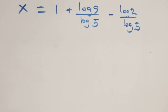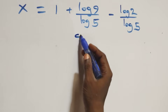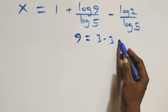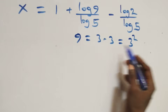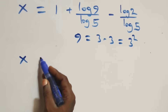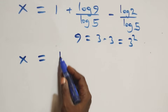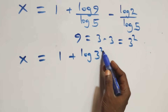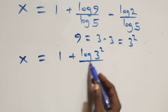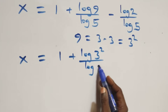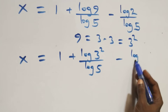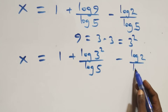From here, we can also rewrite 9 as 3 times 3, which is the same as 3 squared. That is, all we have becomes x equals to 1 plus log(3 squared) over log 5 minus log 2 over log 5.